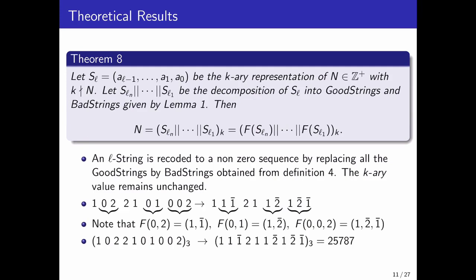Theorem 8 says that any positive integer which is not a multiple of k, its k-ary representation can be recoded by getting rid of all its bad strings by applying the function f on each of its good and bad strings.